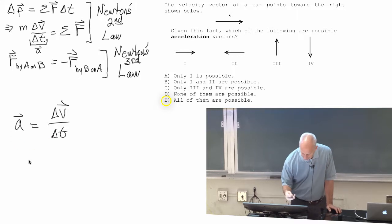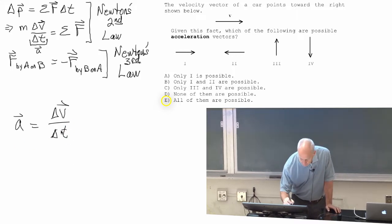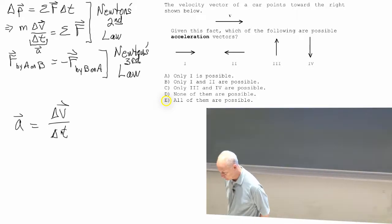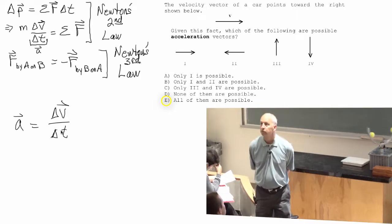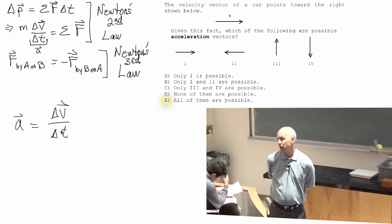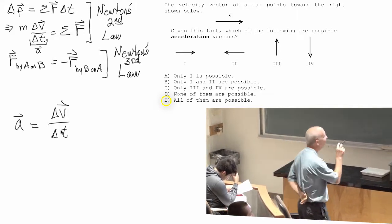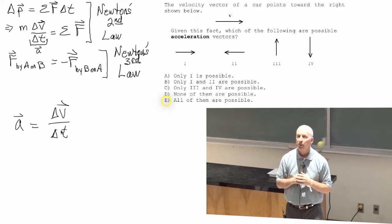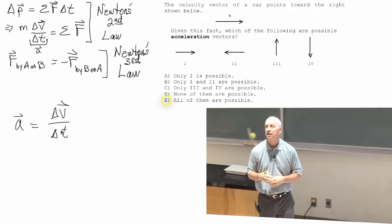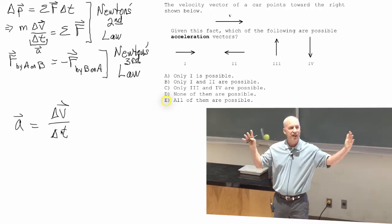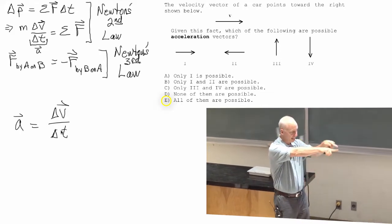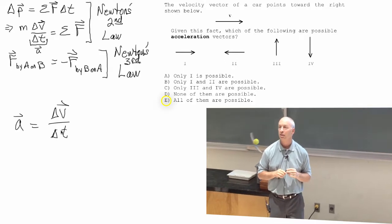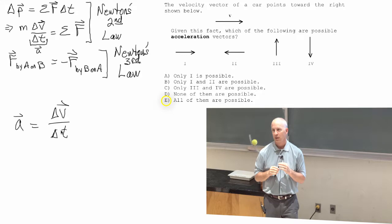Strictly speaking, acceleration is the rate of change of the velocity. The first one — speeding up — is a change. If the object is speeding up, then its velocity vector is getting longer and longer. The magnitude, the length of the velocity vector, tells you the speed. So if it's speeding up, the velocity vector is getting longer and longer, in the same direction that it's pointing.